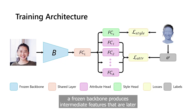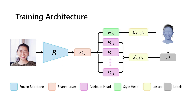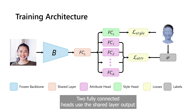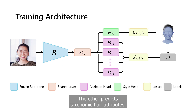Given an input image, a frozen backbone produces intermediate features that are later used to produce an intermediate representation via a shared layer. Two fully connected heads use the shared layer output: one predicting hairstyle assets, the other predicting taxonomic hair attributes.